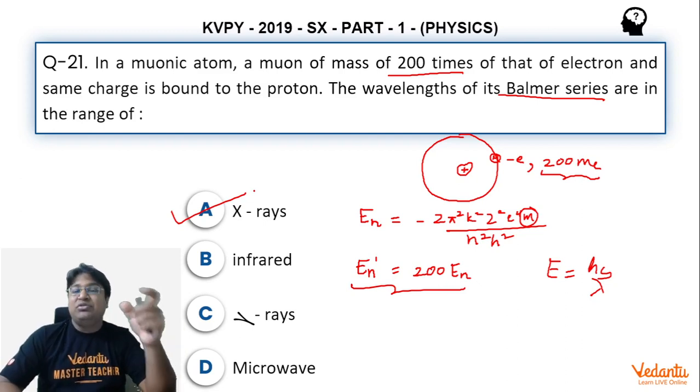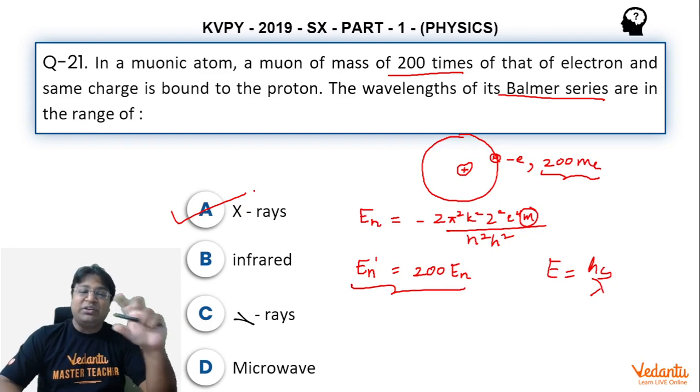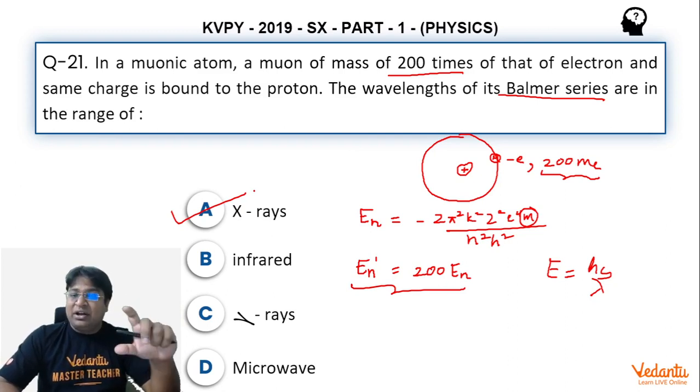For example, I use the fact that visible light is present in Balmer series, so using that you can estimate the range of photons. Of course you can calculate that also but calculation will take a bit of time. You can derive the range of wavelength of Balmer series but that will take time. Rather you can just estimate the energy range and that will give you a good idea of where the wavelength of the Balmer series in a muonic atom will lie.